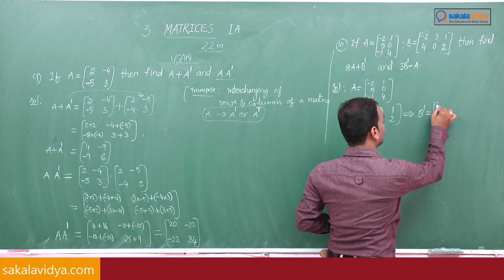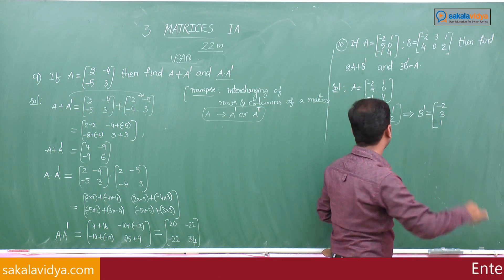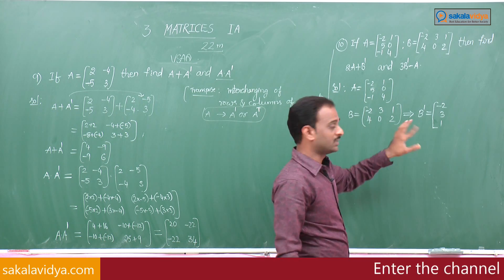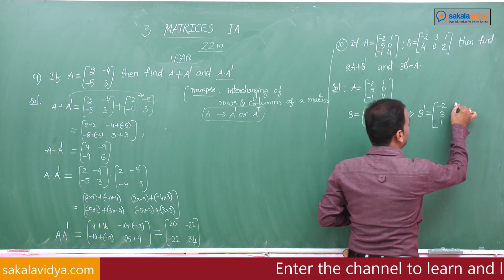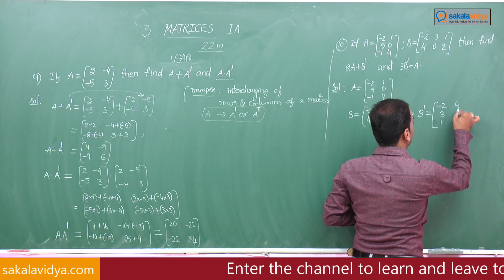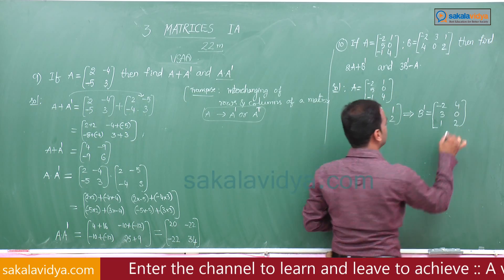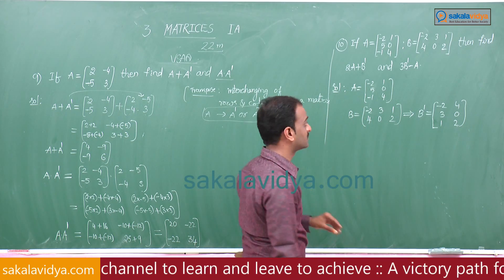So B transpose: the first row elements -2, 3, 1 and second row 4, 0, 2 are interchanged into columns, giving B transpose or B dash.